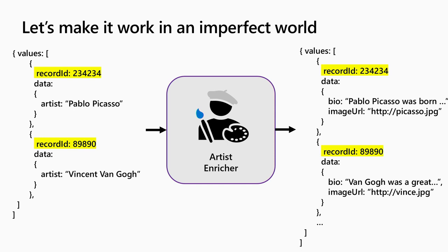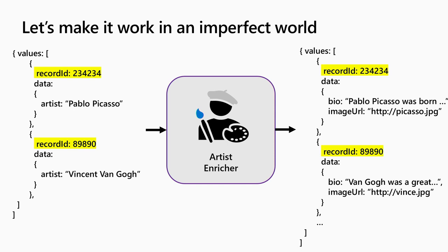The last requirement: because things can be bad and maybe we don't find part of the output, I'll also provide a set of errors and warnings. When you first look at the interface it may look a little complicated, but it really isn't — it's essentially just a list of property bags coming in, a list of property bags going out, and some error and warning messages.